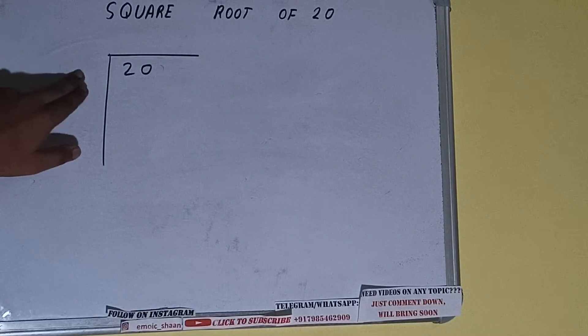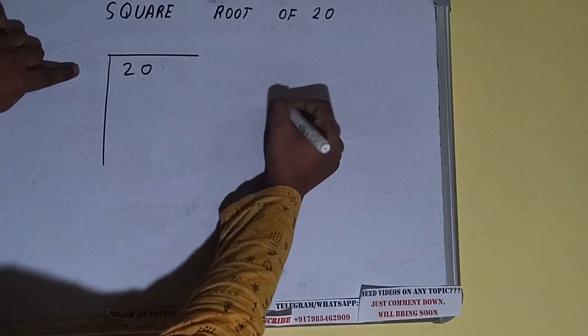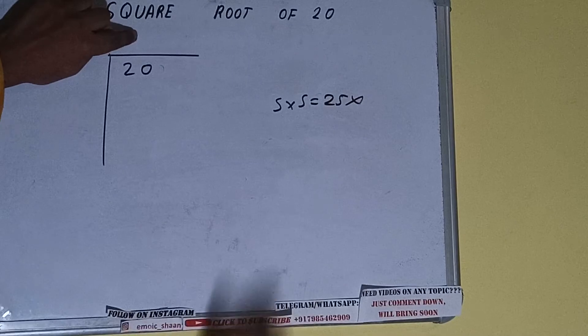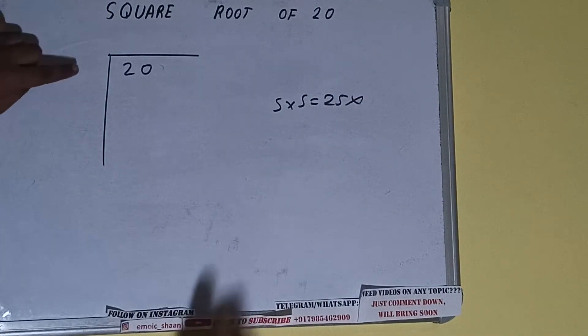Whatever number we write here, we have to write here also. So if we write 5 here and 5 here, we'll be having 25, which is greater than 20, so we cannot use it. If we write 4...